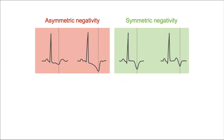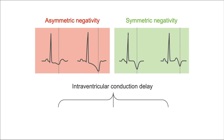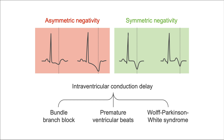One more thing: it's important to know that ST or T-wave changes can also occur in the setting of an intraventricular conduction delay, like bundle branch block, premature ventricular beats, or Wolff-Parkinson-White syndrome. When the QRS complex is broadened, the ST-segment or T-wave can be negative. Now let's get our hands on some real-life ECGs — let's turn to the exercises.